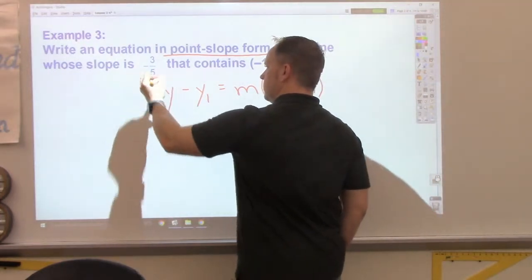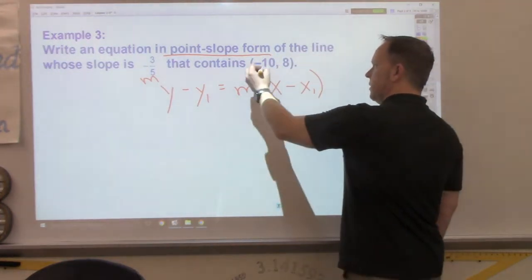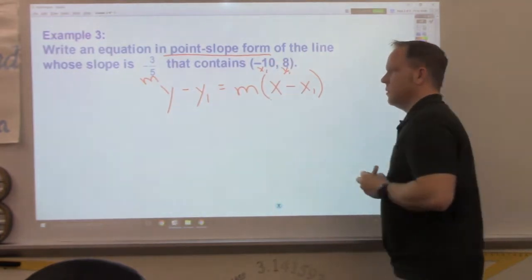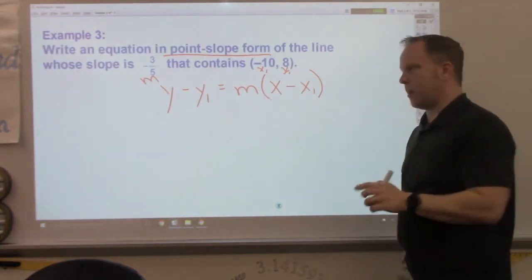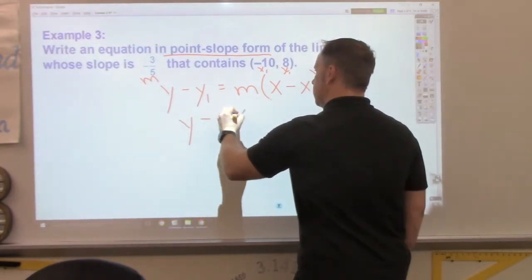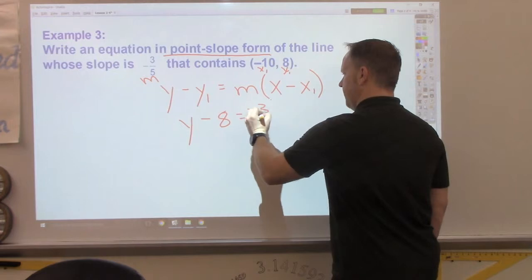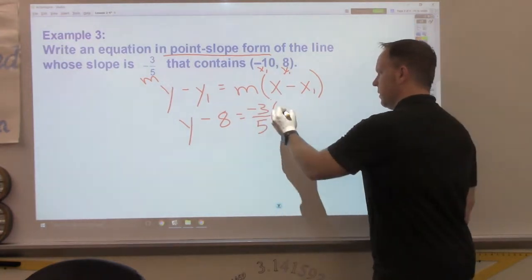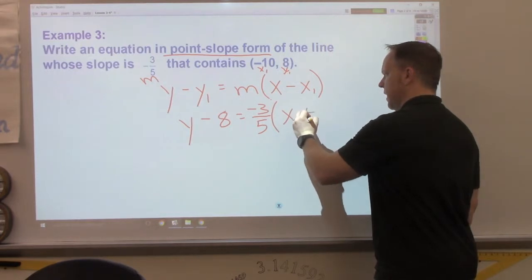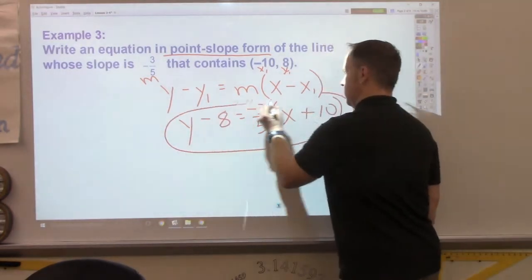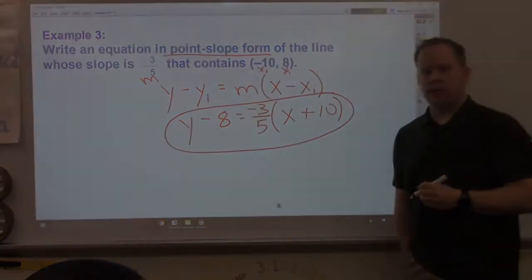Here's my slope. Here is my x1, here is my y1. Plug those three numbers in and stop. y minus 8 equals negative 3 fifths times the quantity of x minus negative 10. That problem is now finished.